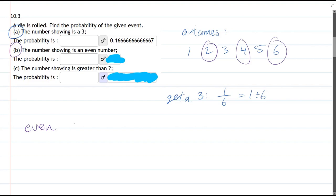So evens, there's three possibilities out of six. So it's going to be three-sixths.